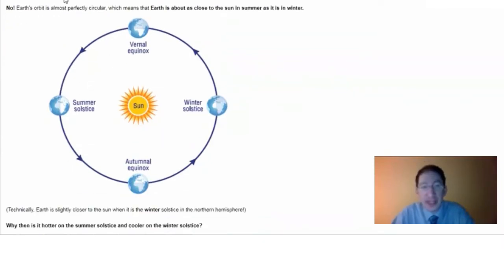Then, you're presented with the key question of this lab. Why is it hotter on the summer solstice and cooler on the winter solstice? Now, when presented with this question, most people get it wrong. They think it has to do with Earth's proximity to the sun, that we're closer in summer and farther away in winter, but that's not the case.